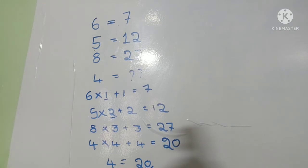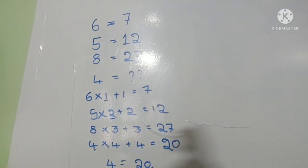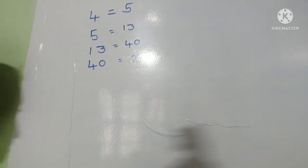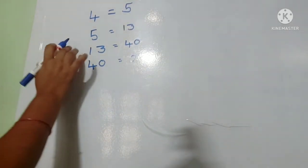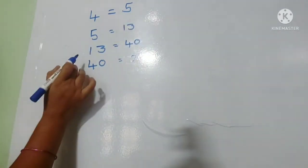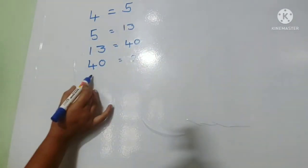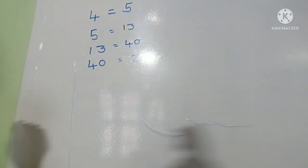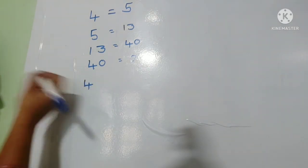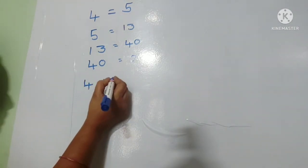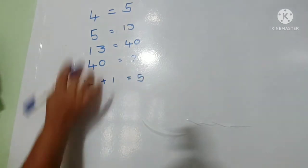Next puzzle friends. In this puzzle, four equals five, five equals thirteen, thirteen equals forty, forty equals question mark. How? Four equals five: see friends, four add one equals five. Next, five equals thirteen.